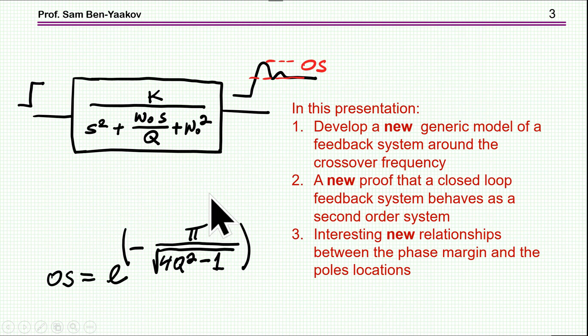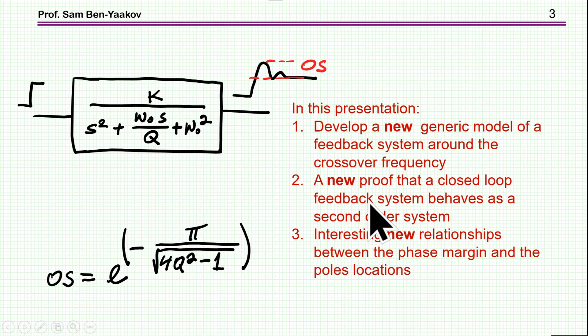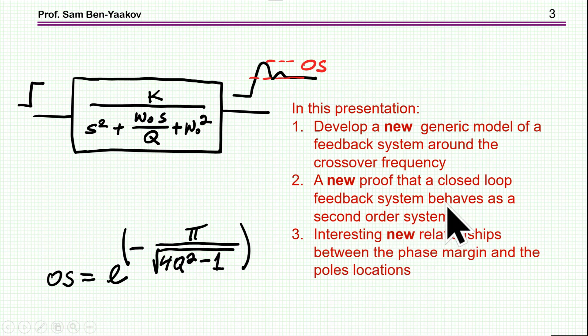In this presentation, I'm going to show, first of all, that a closed-loop system with a small phase margin — smaller than 45 degrees — behaves as a second-order system, and that the overshoot then depends on the Q of this equivalent circuit. I'm developing a new generic model of a feedback system around the crossover frequency, and proving that a closed-loop feedback system behaves as a second-order system in a friendly and intuitive way.